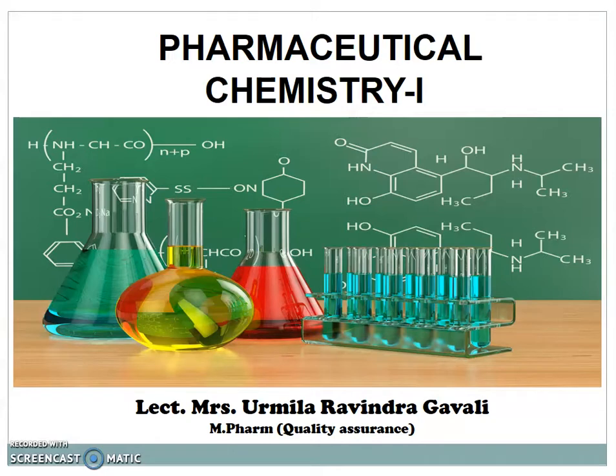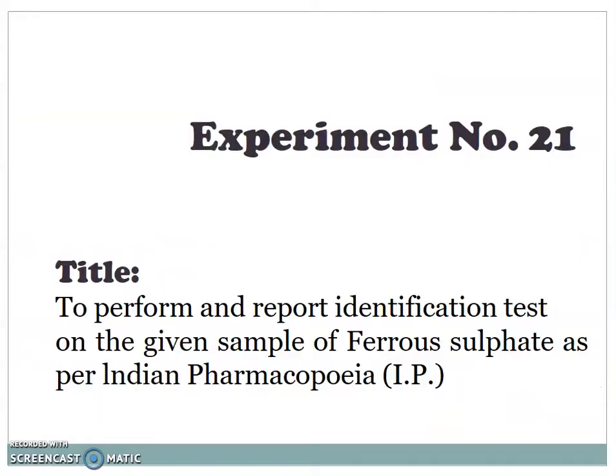Today we are going to deal with identification tests. Experiment number 21: to perform and report an identification test on a given sample of ferrous sulfate as per Indian Pharmacopoeia.